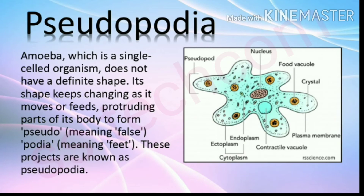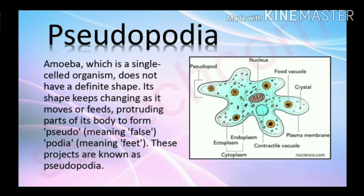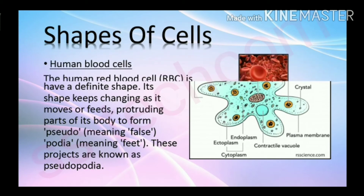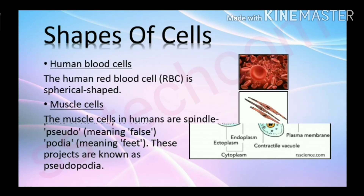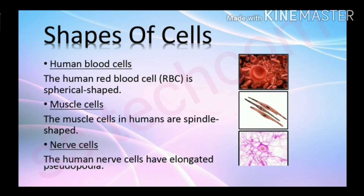Pseudopodia: pseudopodia are cytoplasm-filled parts of the cell membrane that are able to change their form. They are used for locomotion and intake of food. Shapes of cells: the human blood cell (RBC) is spherical shaped.